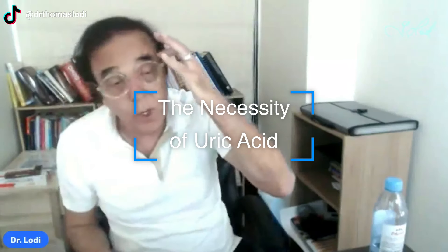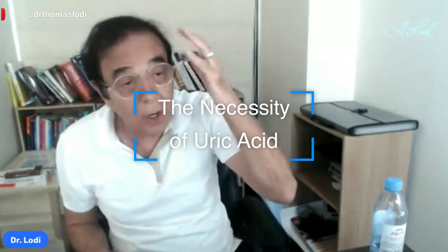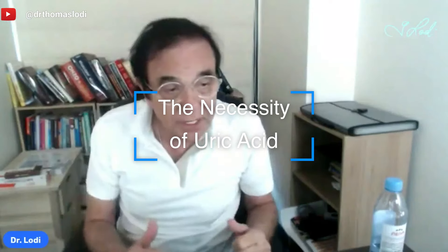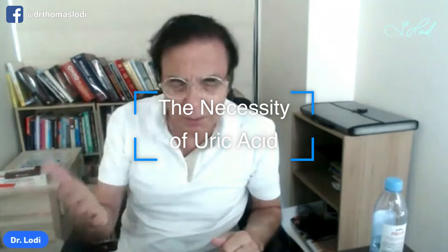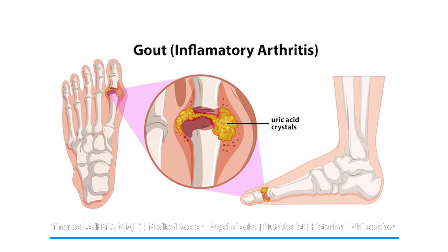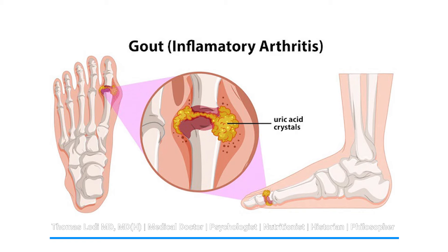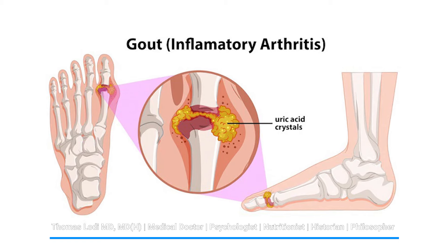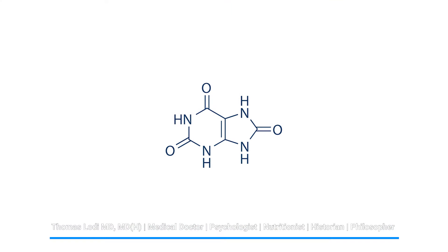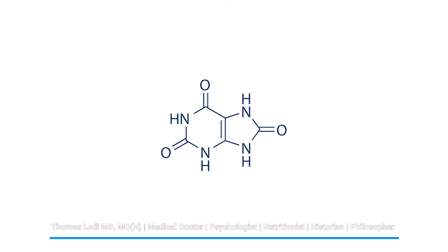Everyone knows the connection between uric acid and gout. Gout is a very painful arthritis that usually occurs in the big toe. It's well known, and that's because uric acid forms into urate crystals — remember, all acids can become salts.